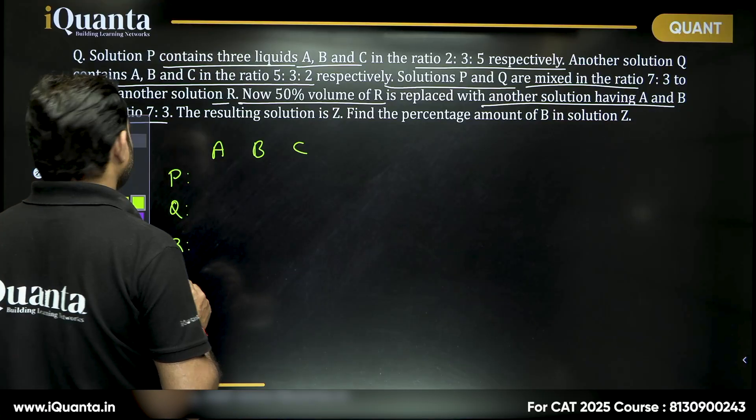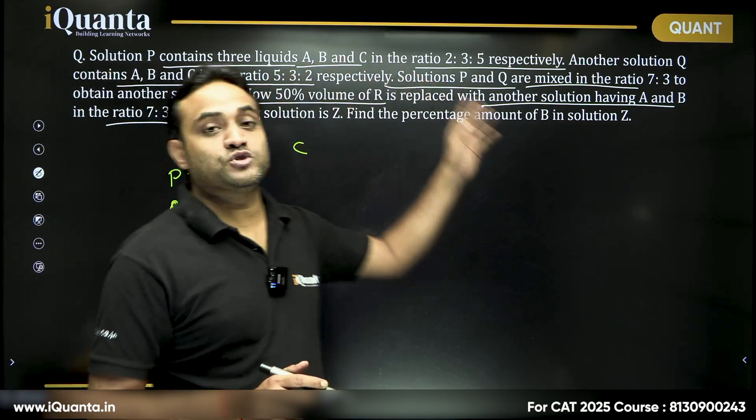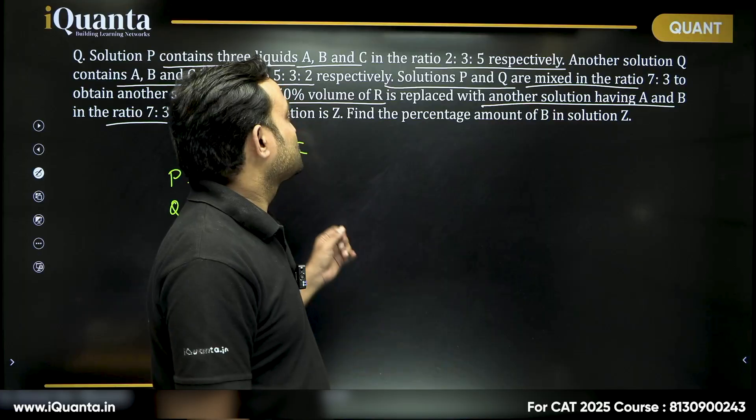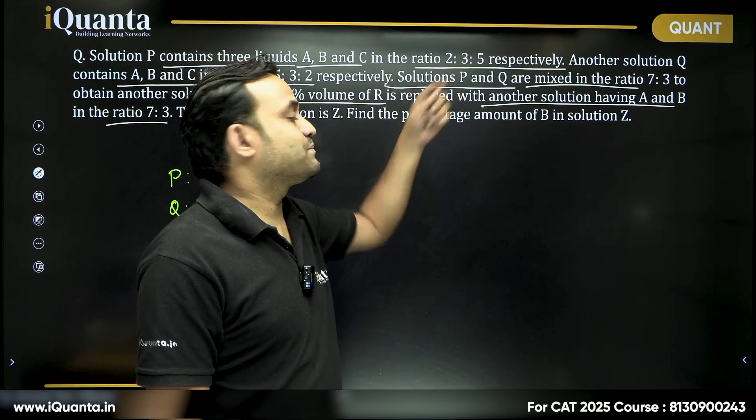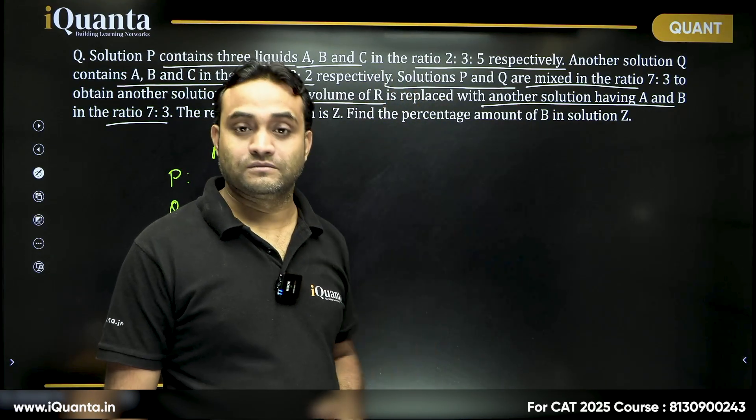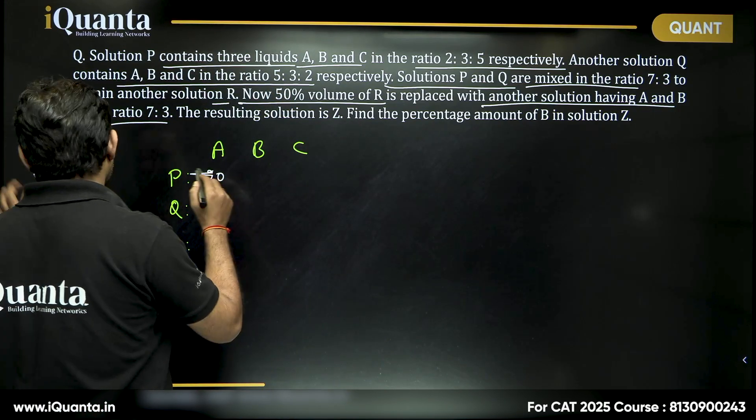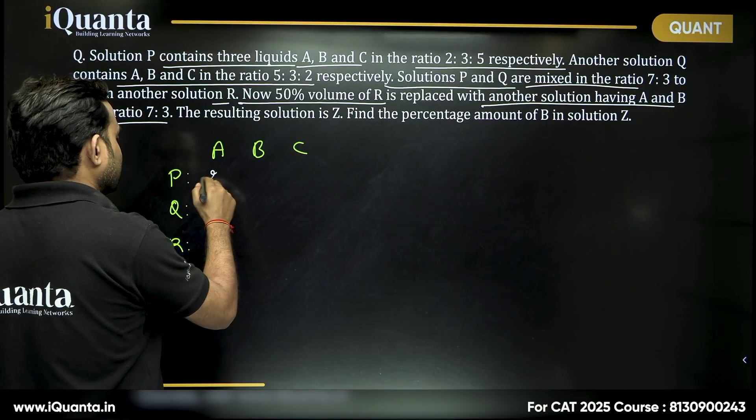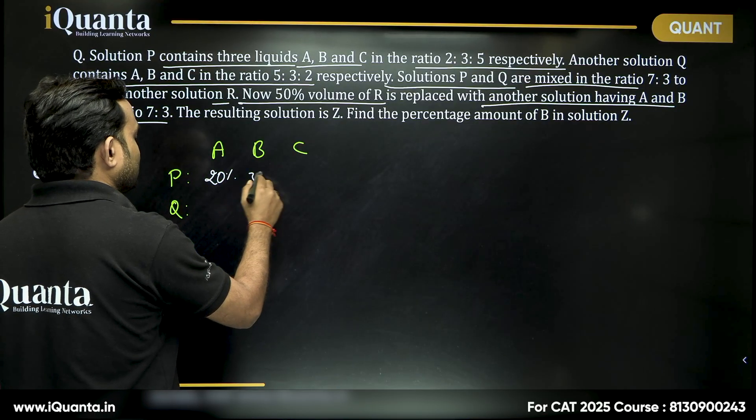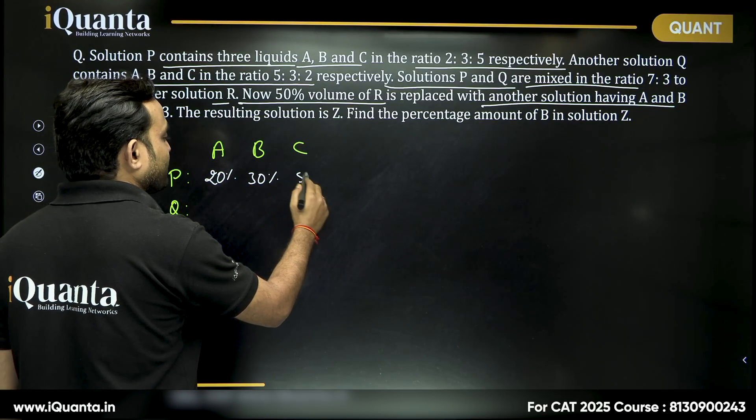Okay, that for now what is the percentage, the ratio of A is 2 is to 3 is to 5. So the A is 2 plus 3 plus 5, 2 out of 10 means 20 percent. A is 20 percent and similarly B is 30 percent and C is 50 percent.